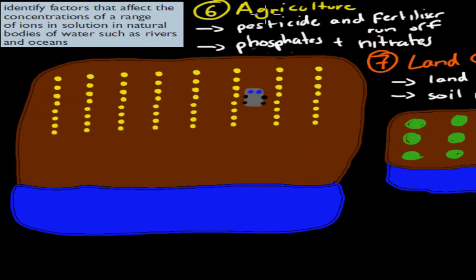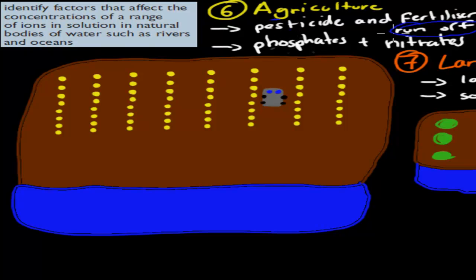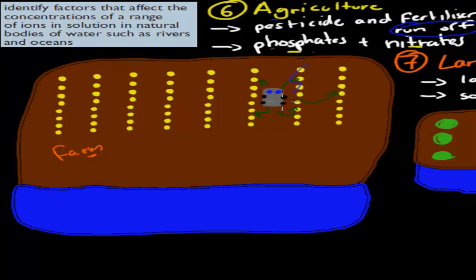Another example would be agriculture — more specifically the use of pesticides and fertilizers, because they can run off into the ocean. The ions we're often talking about are phosphates, nitrates, and ammonium ions. Fertilizers are there to make plants grow faster, but then there might be rain which washes that actual fertilizer into a river or ocean. So agriculture can increase your phosphate, nitrate, and ammonium concentrations because of runoff that has come from the farm and into the ocean.